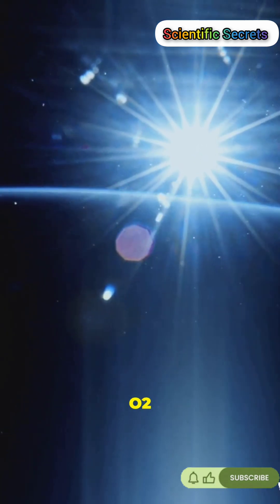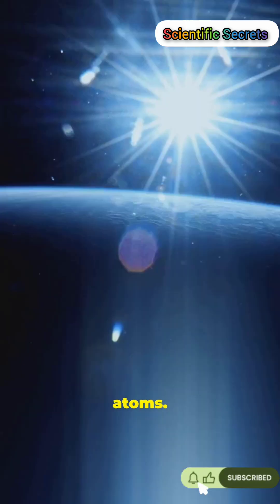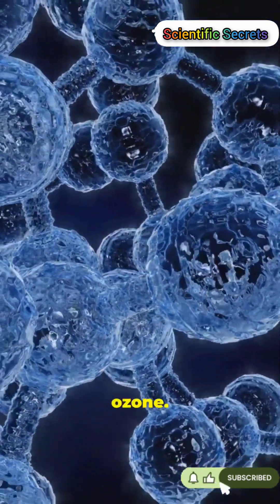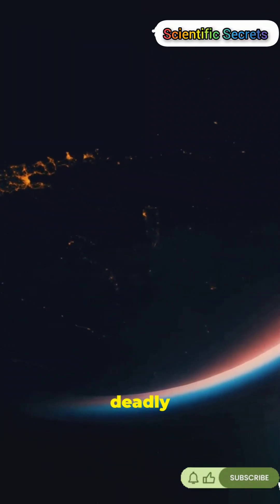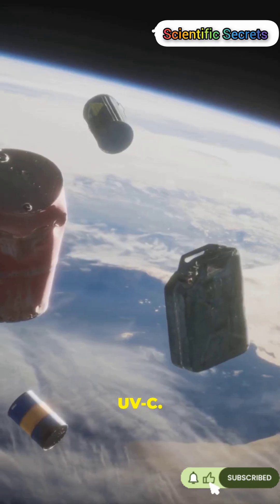Ultraviolet light splits O2 into single oxygen atoms. Those atoms then recombine into ozone. Ozone absorbs deadly UVB and blocks almost all UVC.